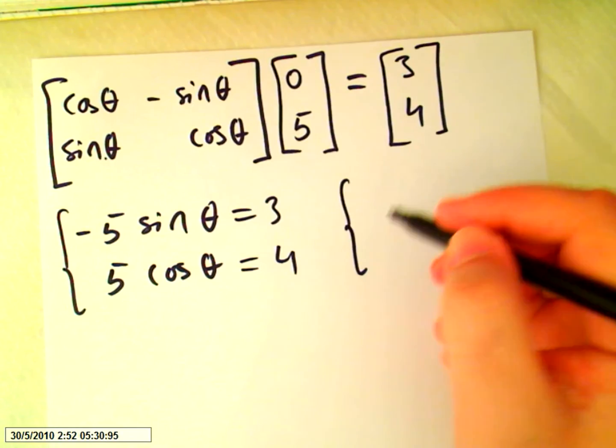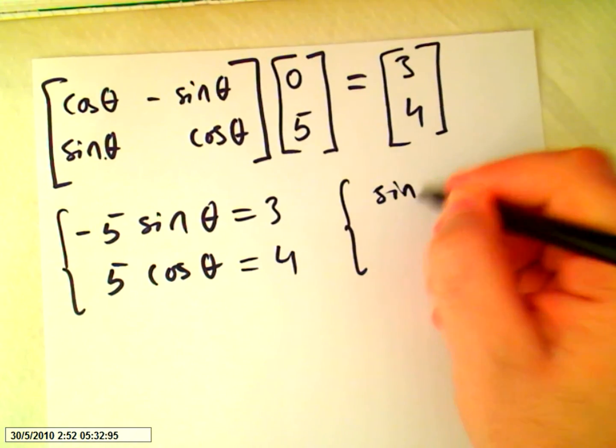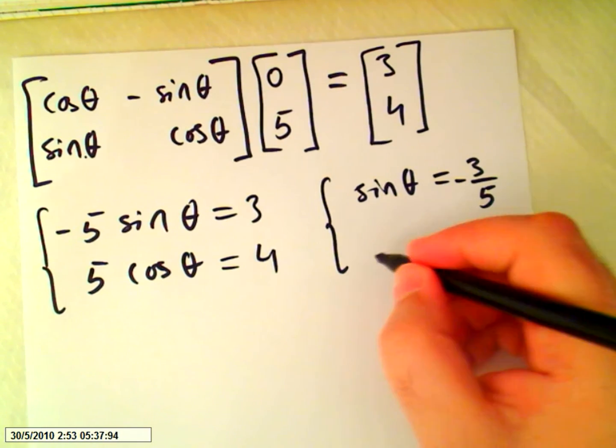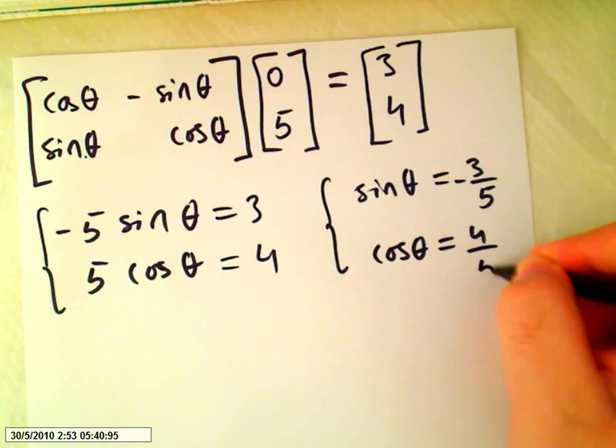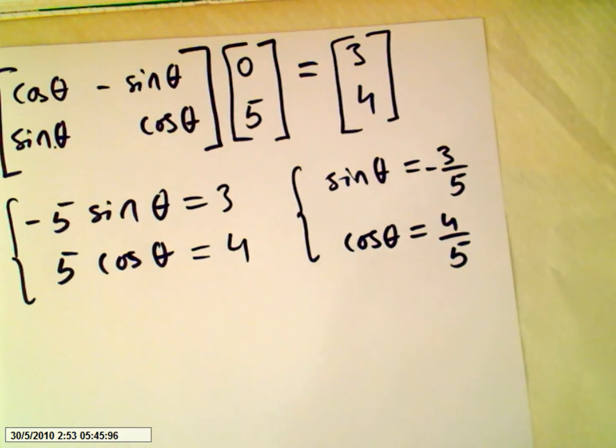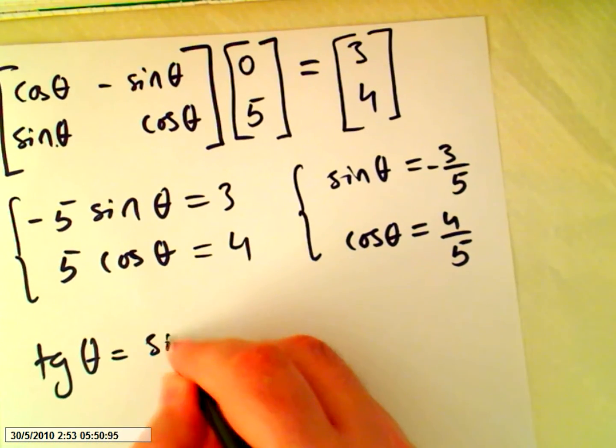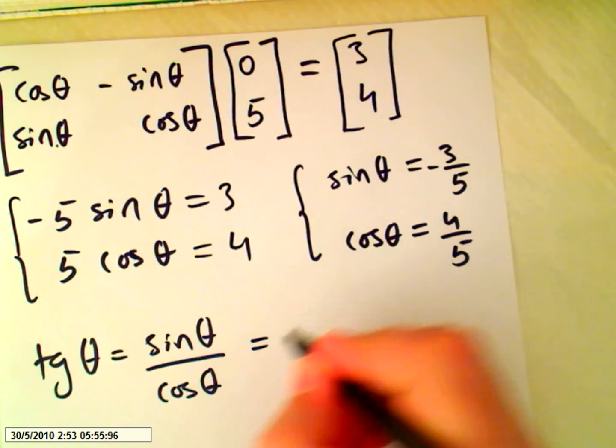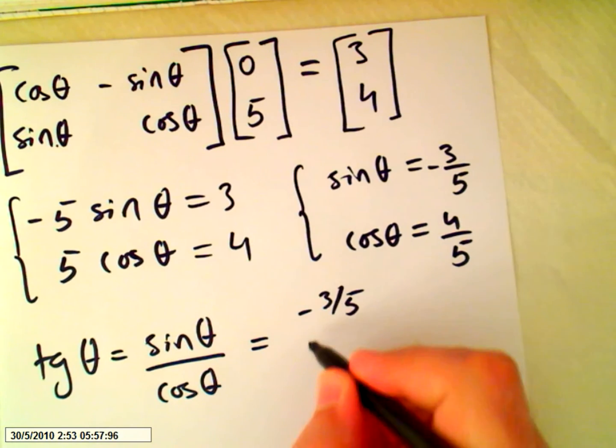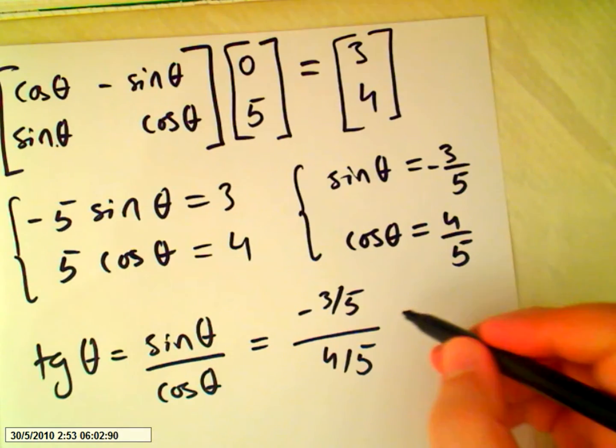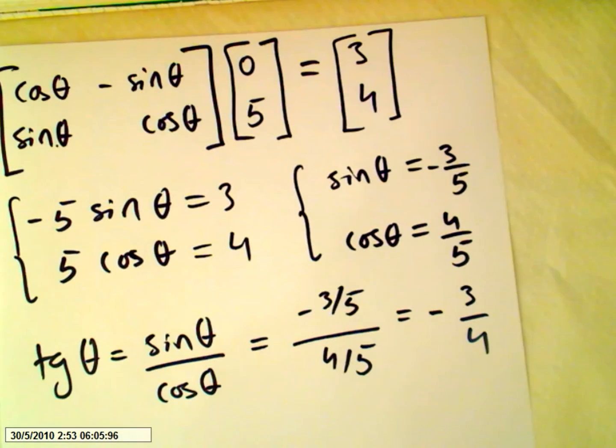So this will be Sine Theta equals minus 3 over 5, Cosine Theta equals 4 over 5. And since this is a rotation, we can do Tangent Theta will be Sine Theta over Cosine Theta, so we have minus 3 over 5 divided by 4 over 5, so we will get minus 3 over 4.